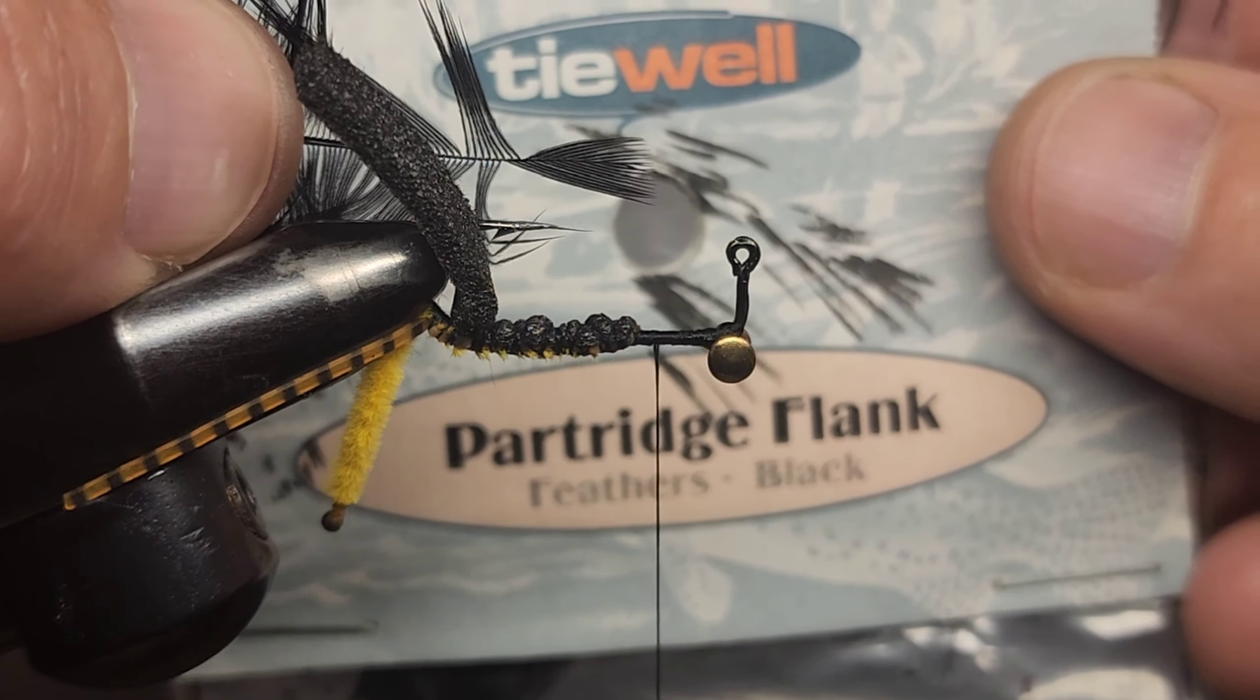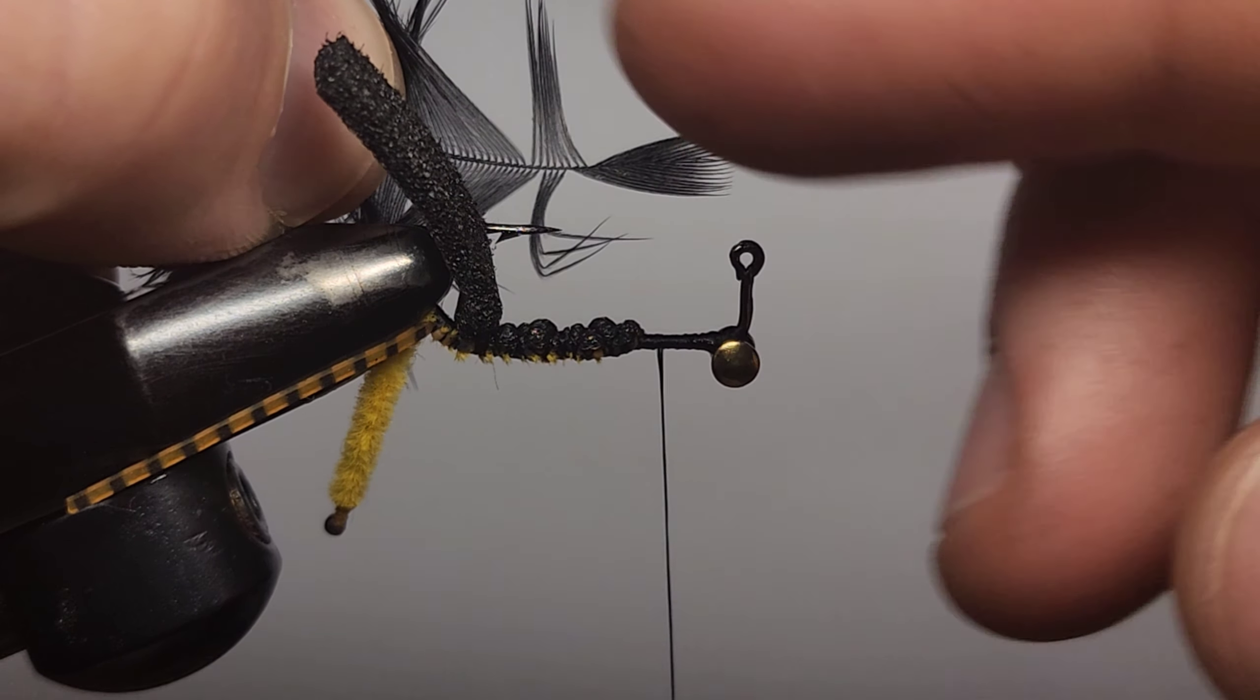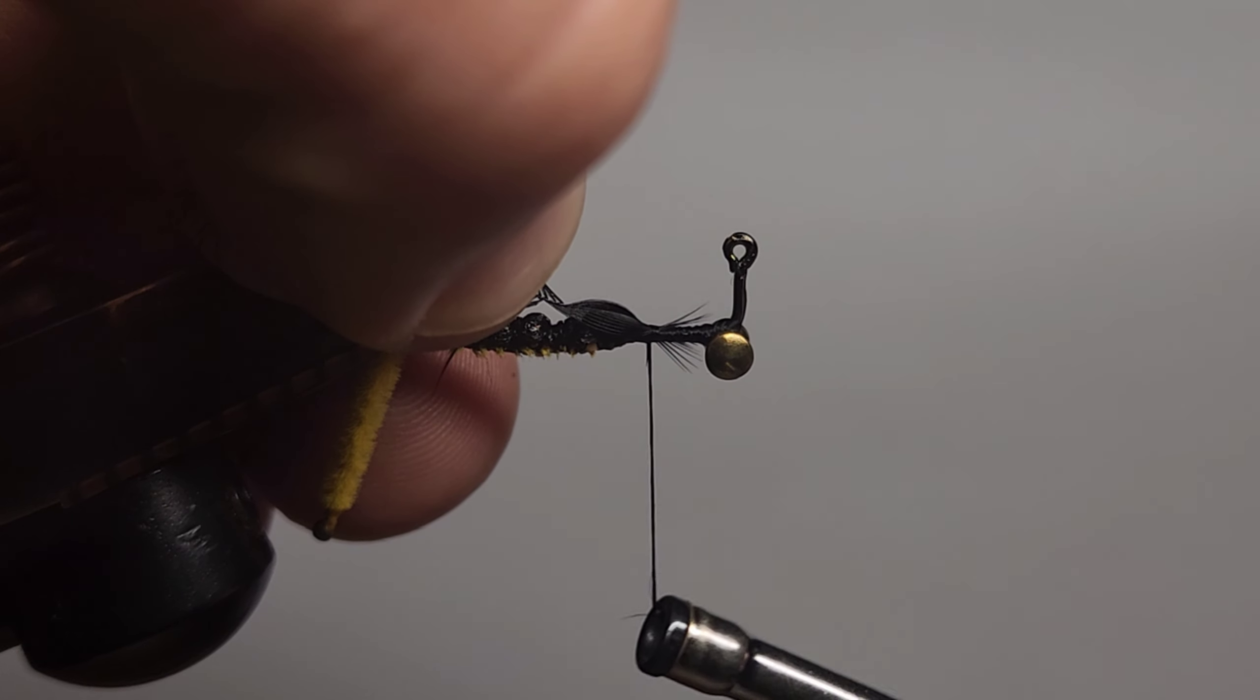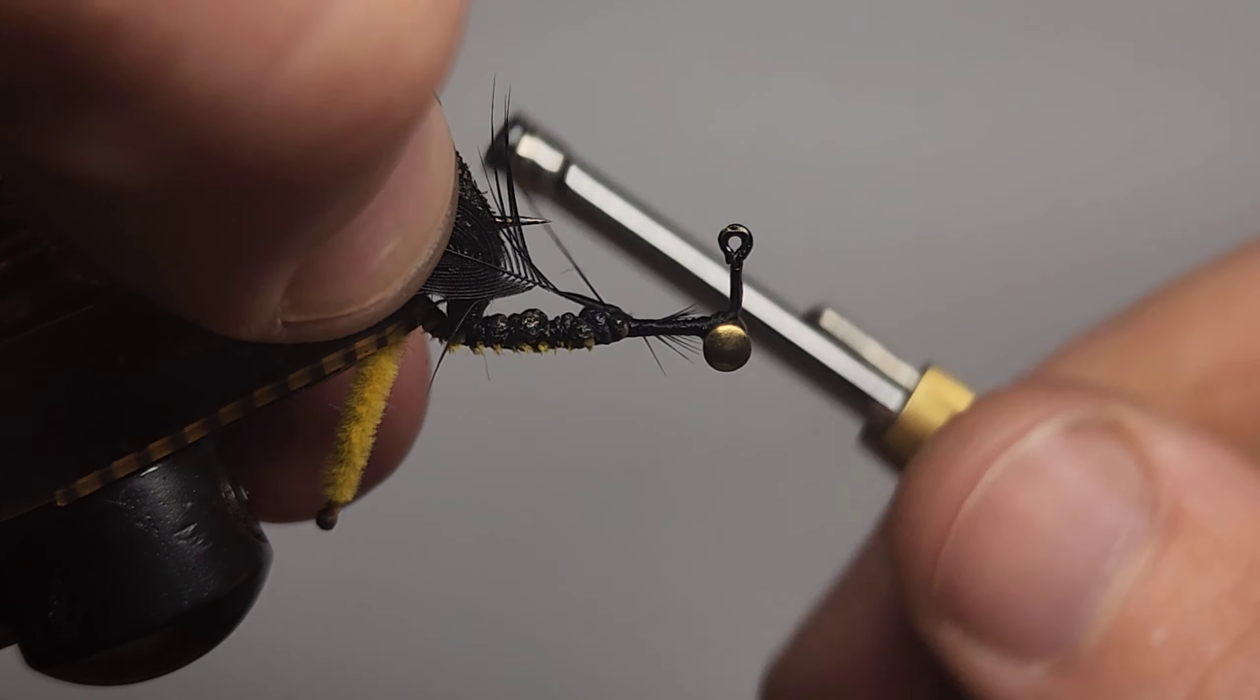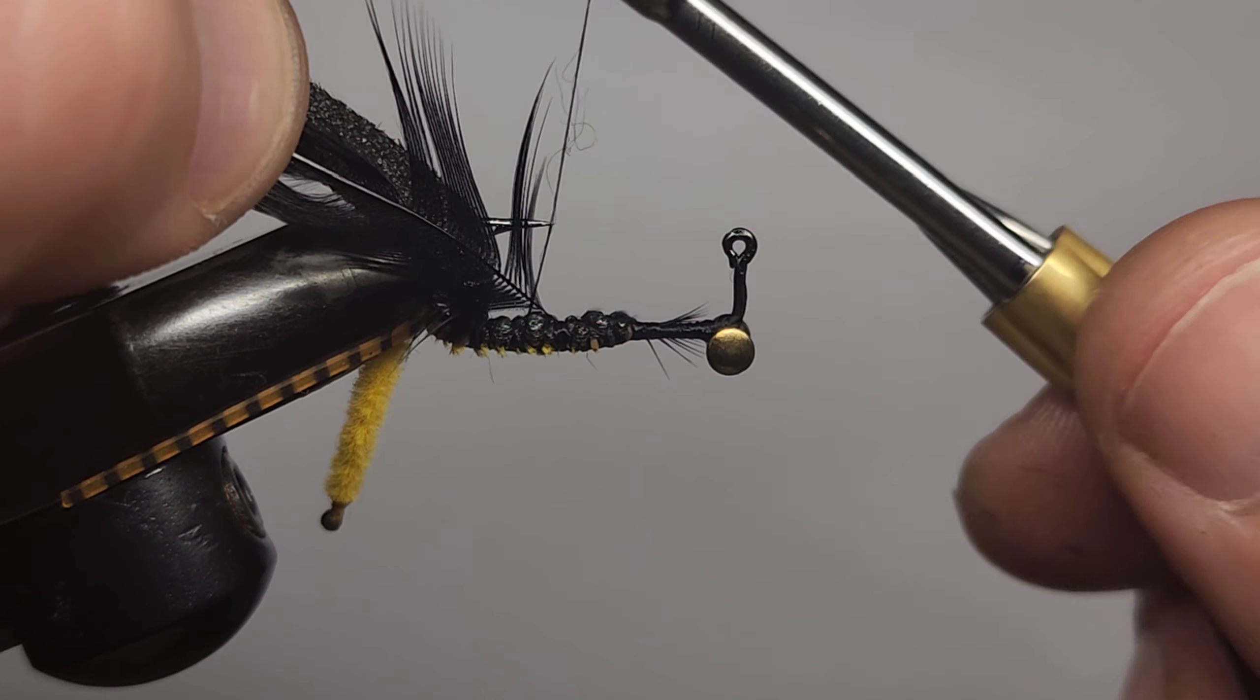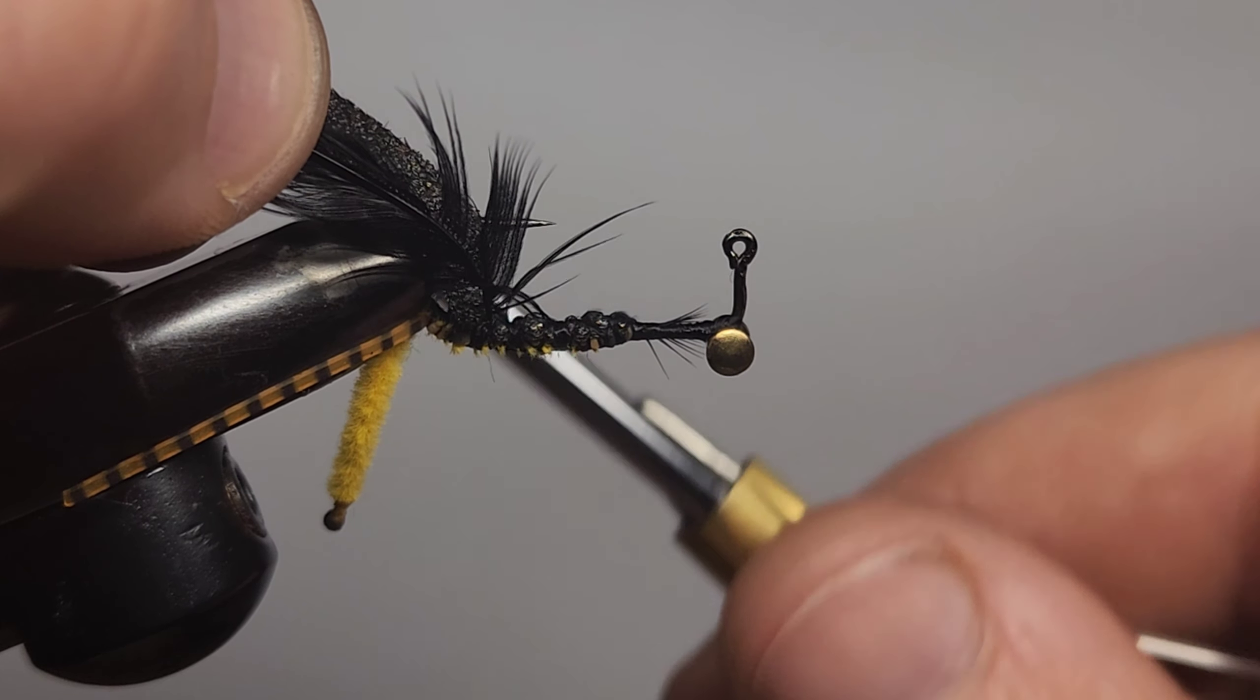So next we're going to tie in a partridge flank. Just prepare the tip like this. Just strip back some of the fibers and we're going to tie in the tip. Just tie in that tip. Like so. Tie it all the way back to where you tied your foam in.